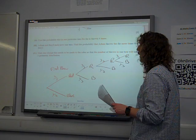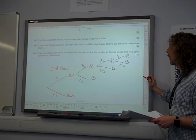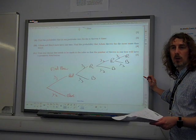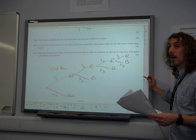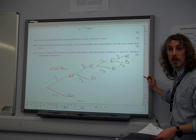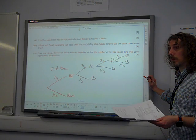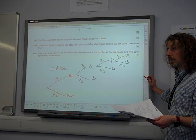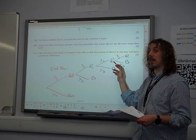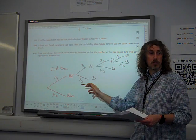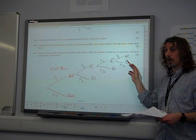Part two. Find the probability that in one particular turn the die is thrown four times. Now, quite a few people got this wrong, and again, it's the same theme of over-complication. So the probability of it being thrown four times is the same as getting three consecutive reds. If we're going to throw it four times, we need three consecutive reds. It does not matter what happens on the fourth throw.